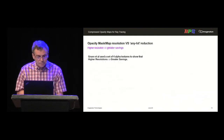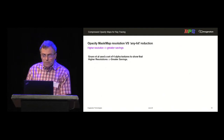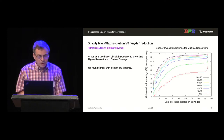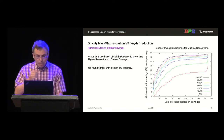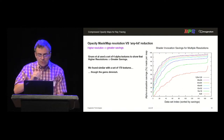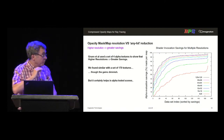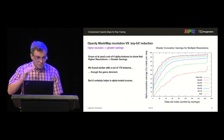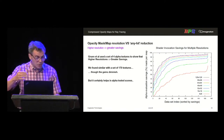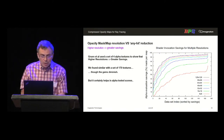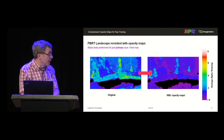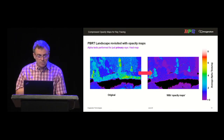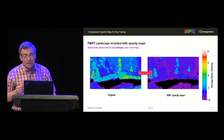Can we do better? Gruen et al. looked at four alpha textures and showed that higher resolutions get you greater savings. We confirmed that with a set of 170 textures, and you can see that the gains diminish. Going from 32x32 to 64x64 gives about a 6% saving, but quadrupling the storage again only increases the saving by 3 or 4%. Still, it certainly helps in alpha-tested scenes — applying an opacity map to the landscape scene shows the number of tests has plummeted to typically less than one per ray.